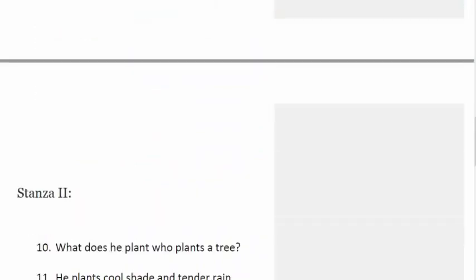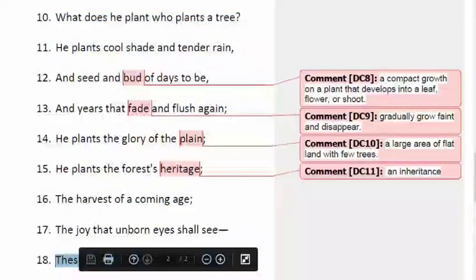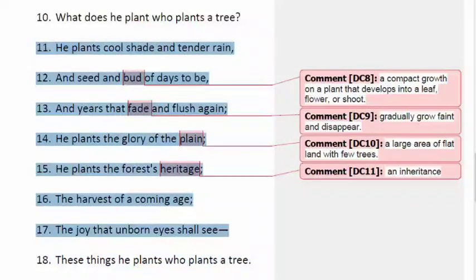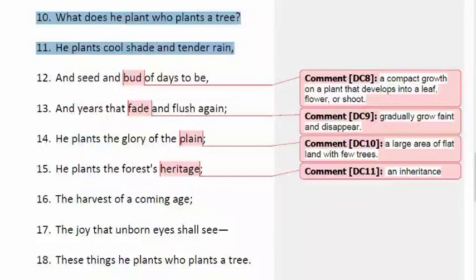Let's move on to stanza number two. In each stanza there is the same question asked and the same conclusion derived, with a little deviation in the answer. What does he plant who plants a tree? He plants cool shade and tender rain. Close your eyes for a few seconds and imagine yourself sitting below a huge, calm, dense tree. Imagine the season to be summer - it's hot everywhere, but under the tree it is so cool, so relaxing, so calm. This is what happens when you nurture a tree and let it grow.